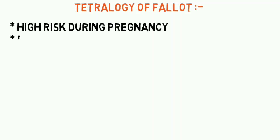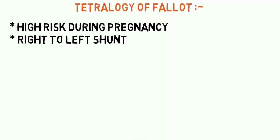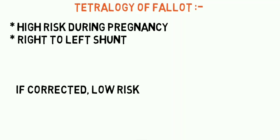Tetralogy of Fallot is another congenital heart disease associated with high risk during pregnancy and can lead to even threatened abortion. It involves a right-to-left shunt of circulation — that is, the flow of blood from the right chambers to the left chambers of the heart. If tetralogy of Fallot is not treated in childhood before pregnancy, there will be high risk to fetal survival and even the mother's survival. However, if corrected prior to pregnancy, there is low risk associated with pregnancy.